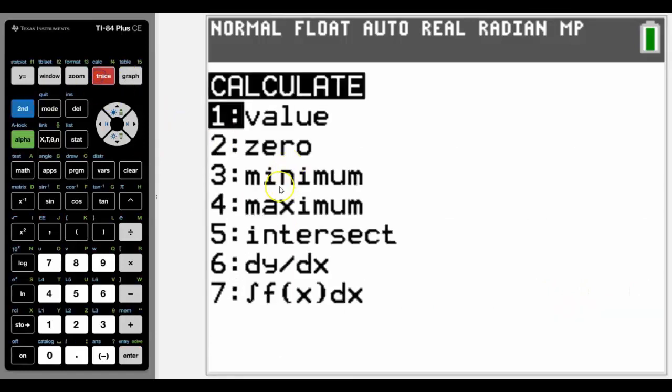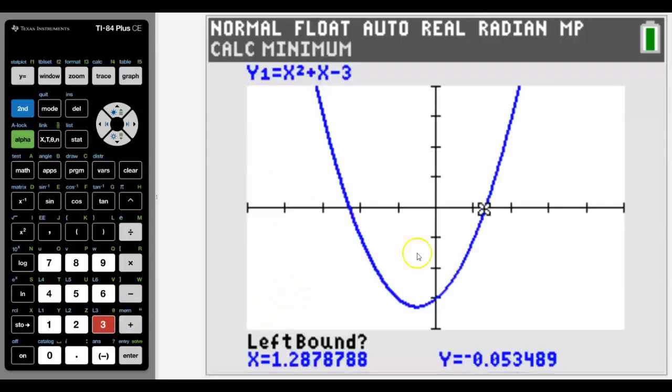We're now going to look at the minimum and maximum, and that would depend on whether you're looking at the convex or concave section of the curve. In this case my quadratic is convex so we're going to look at the minimum, and the way that we do that is very similar to the zero. We need to go to the left of where the minimum is.